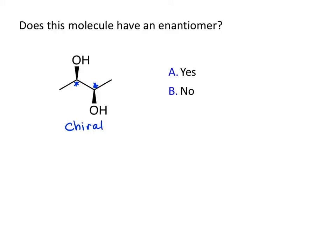Chiral molecules do have enantiomers, so I can draw the enantiomer — the easiest way is just inverting both chiral centers. I'll put this OH back and this OH back. That's the enantiomer; it's a non-superimposable mirror image.